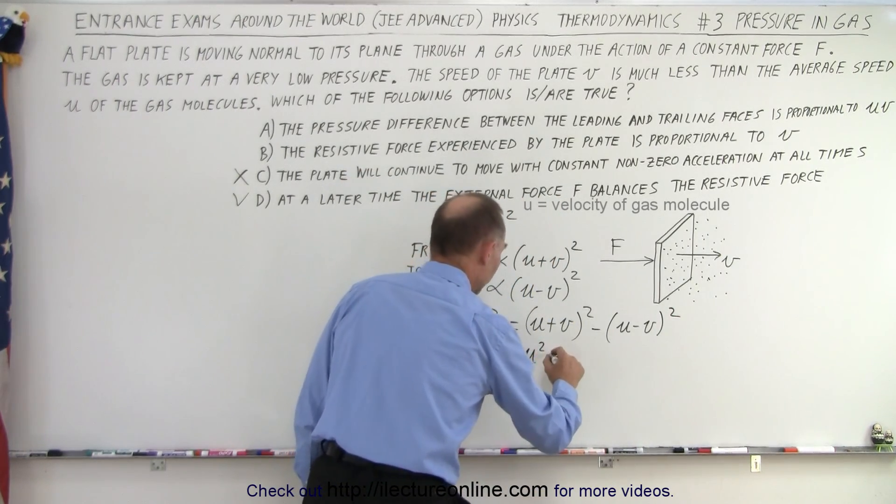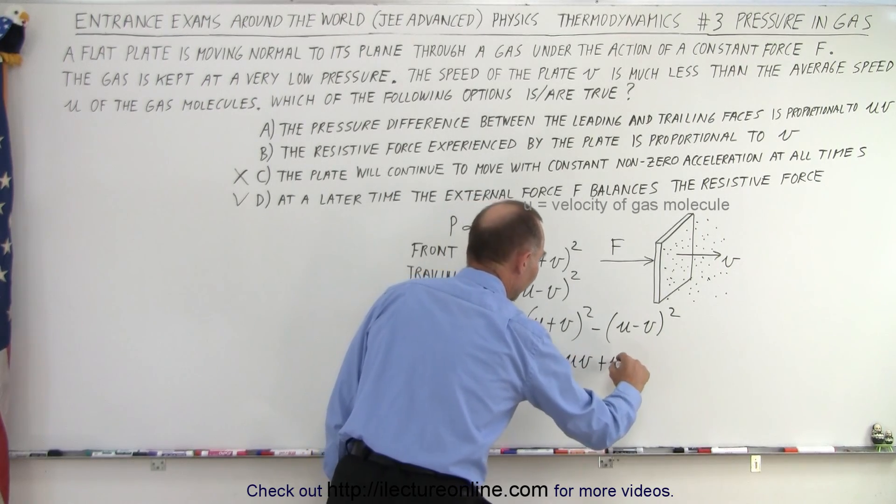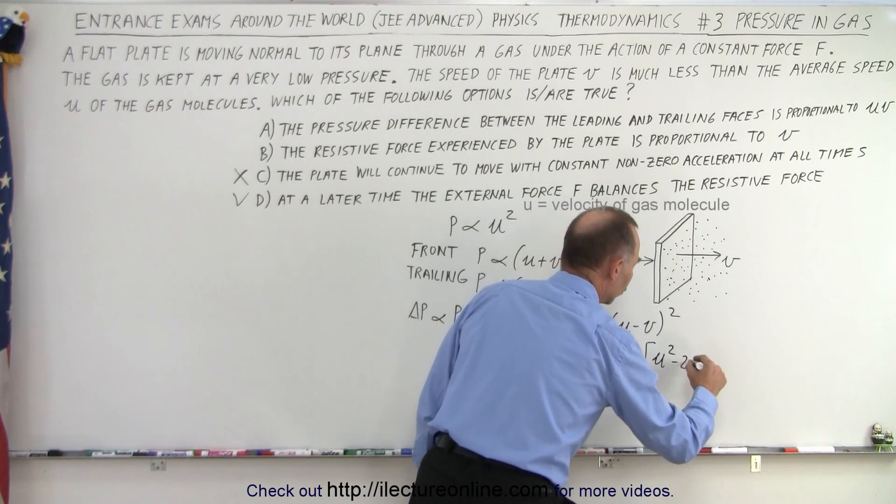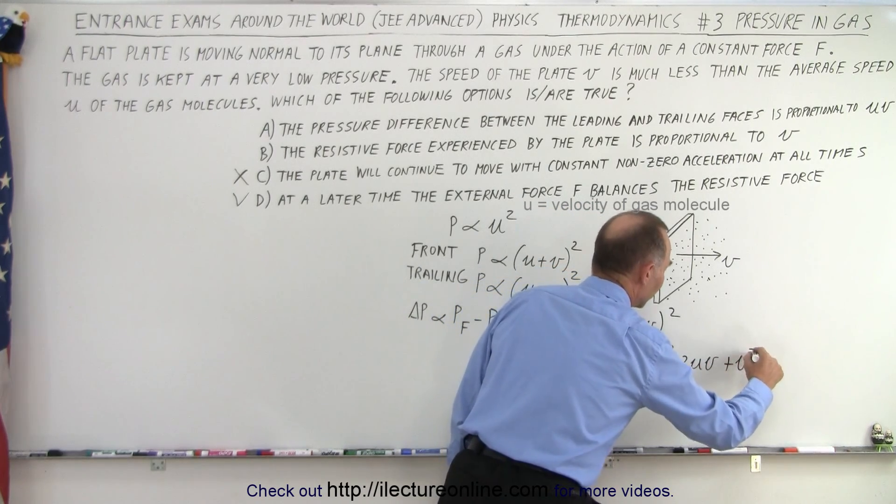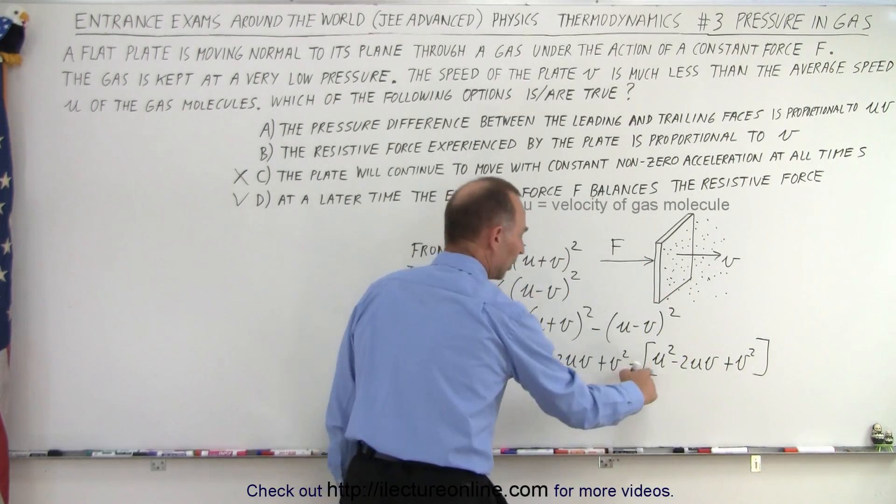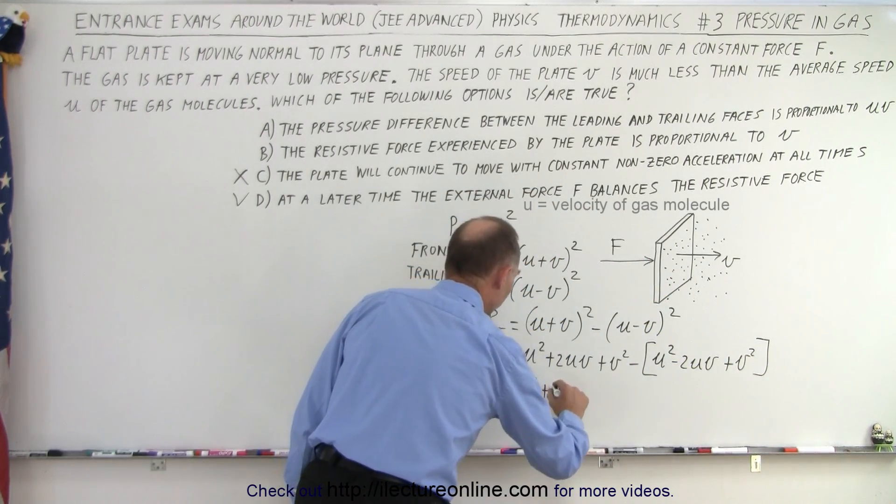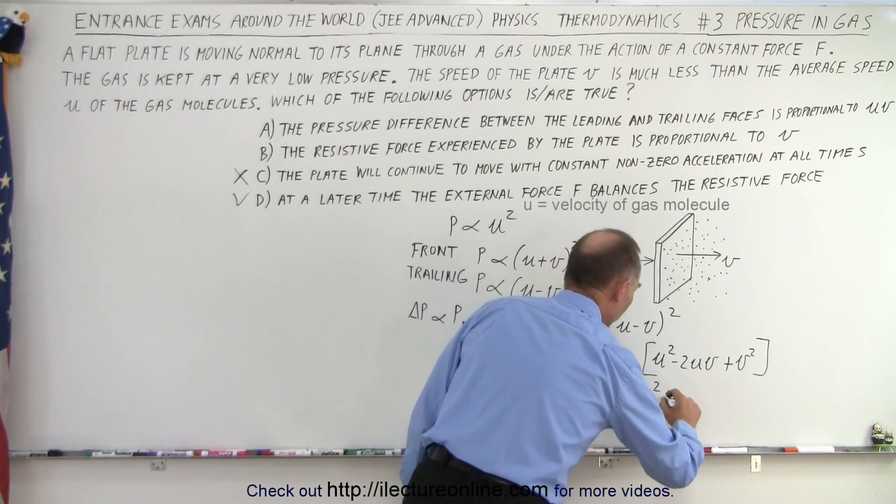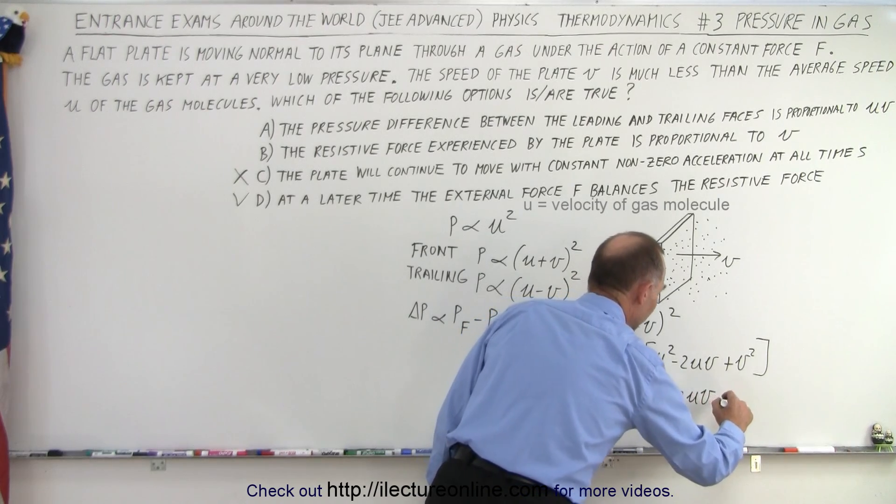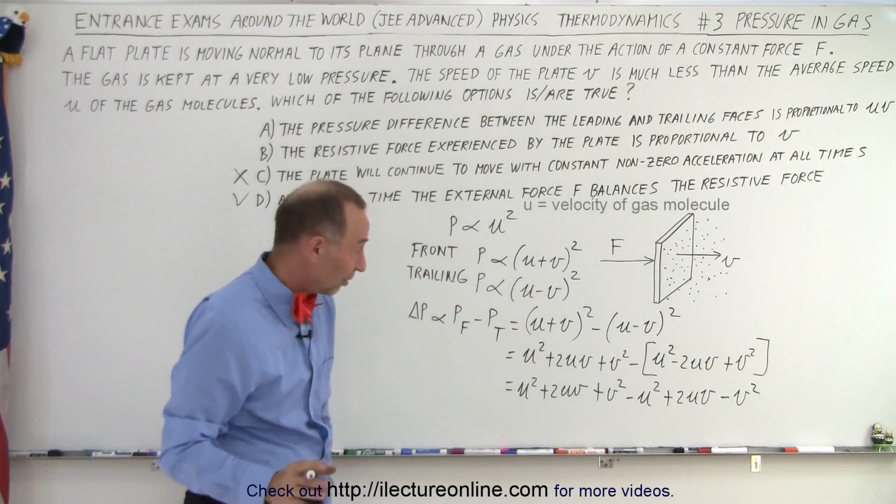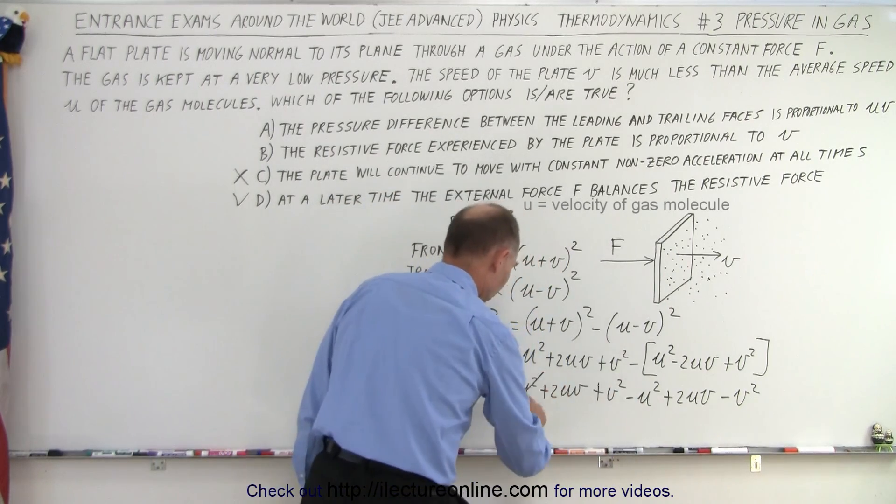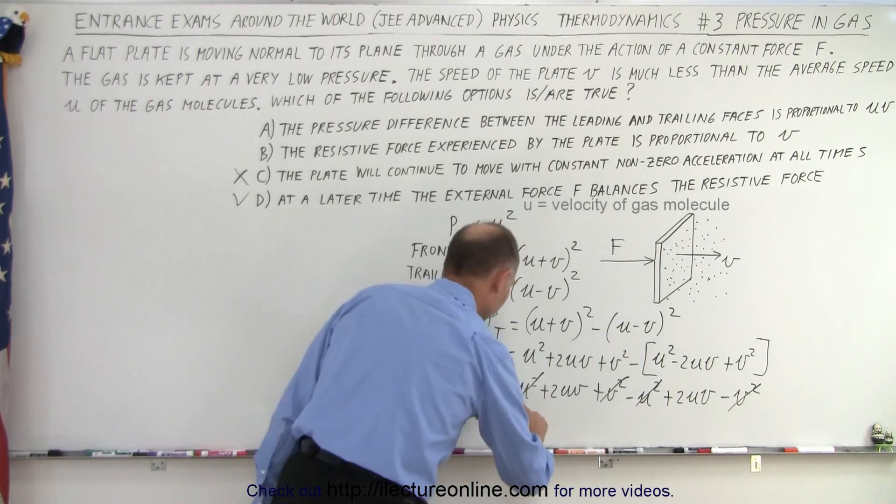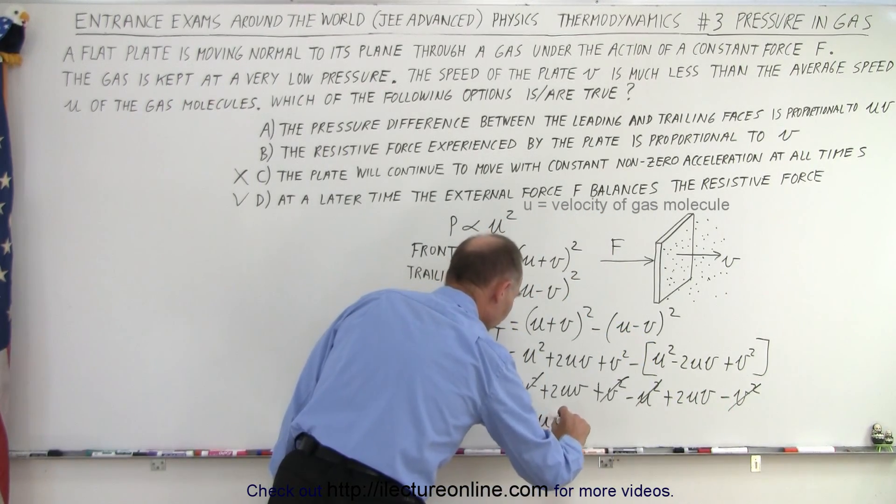So this is equal to U squared plus 2UV plus V squared minus U squared minus 2UV plus V squared. And if we apply the minus sign we get U squared plus 2UV plus V squared minus U squared plus 2UV minus V squared. Notice at this point this U squared will cancel out that U squared, this V squared will cancel out that V squared, and we're left with this is equal to 4UV.